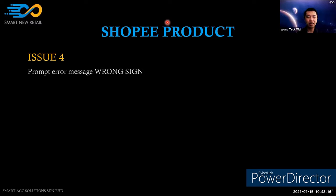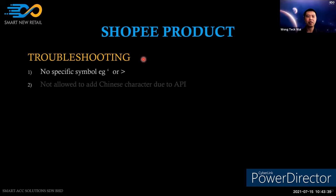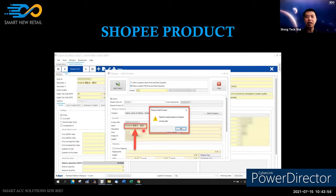Issue four is the 'wrong sign' error prompt. To troubleshoot, first check the item description — it cannot contain specific symbols such as a single quote or arrow characters. These symbols are not supported by the Shopee API for sending items to the store. This was confirmed through discussion with the Shopee help desk and their programmer.